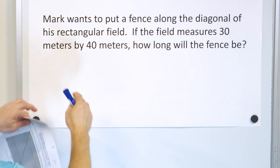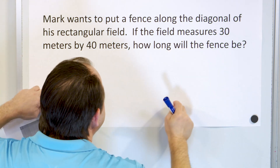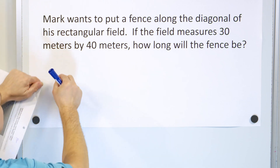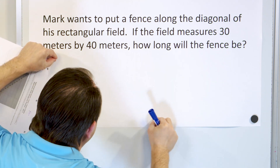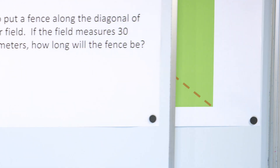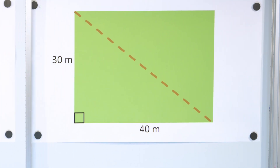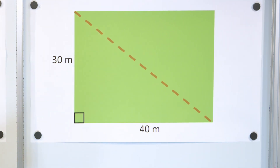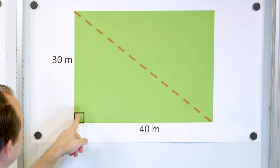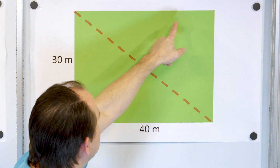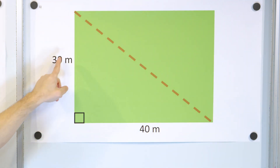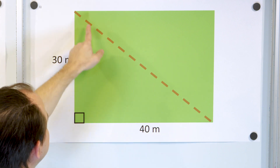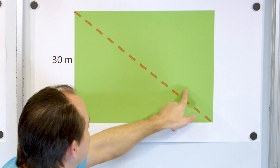We need to draw a picture. We have a rectangular field, and the fence we're building goes along the diagonal. I've drawn a nice picture here. This is a rectangle — we have a right angle in each of the corners, though I didn't draw all of them. The field is 30 meters by 40 meters. The question is: how long is the diagonal?